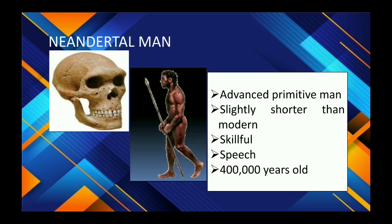Next is Neanderthal Man, an advanced primitive man, slightly shorter than modern humans. They developed speech and lived 400,000 years ago, walked upright, had lower brow, resting jaw, larger teeth, and a dome-shaped head. They were skillful users of tools and were cave dwellers adapted to cold environments.